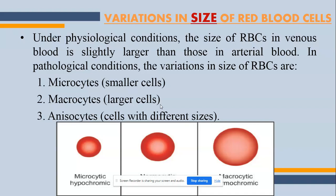The first abnormal size is microcytes — 'micro' means small and 'cytes' means cell, so these are small cells. Macrocytes — 'macro' means large — so these are large cells. And anisocytes means cells with different sizes. As you can see in the image: the first is microcytic and hypochromic (small size, less color); the second is normochromic macrocytic (normal color but large size); and the third is macrocytic hypochromic (large size, less color).